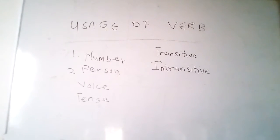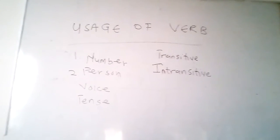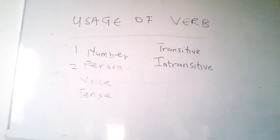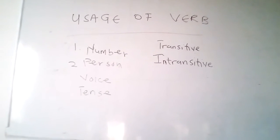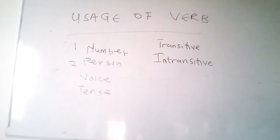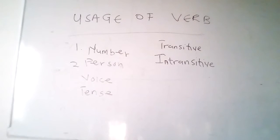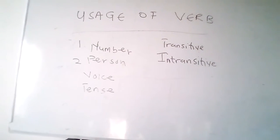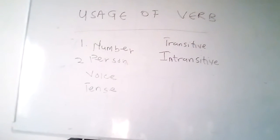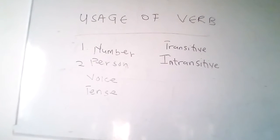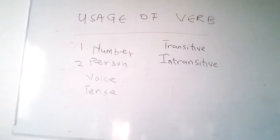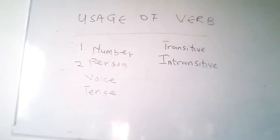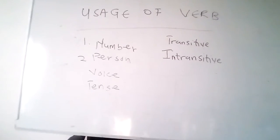Number two — when the doer of the action, the subject, is neither certain nor known. Example: 'They were killed during the civil war' — the killers are not known. 'The secretary has been invited' — the one who invited is not known. That is when the doer of the action is neither certain nor known.